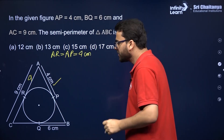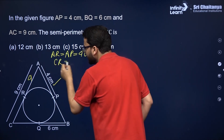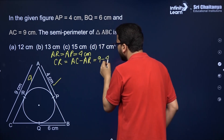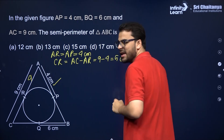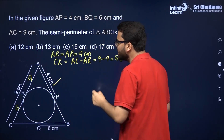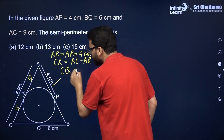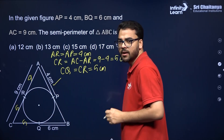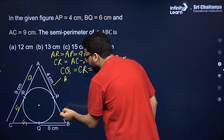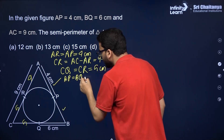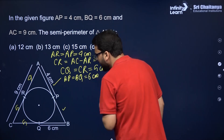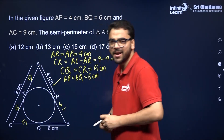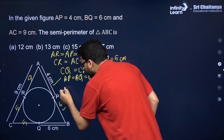CR equals AC minus AR. AC is 9, so 9 minus 4 equals 5 centimeters. By the same property, CQ also equals CR equals 5 centimeters. Similarly, BP equals BQ equals 6 centimeters. So you now have all the values needed to find the perimeter of triangle ABC.